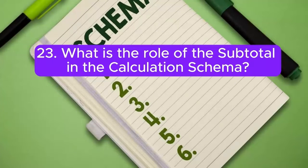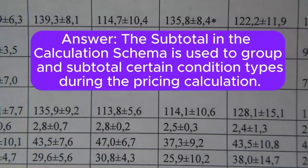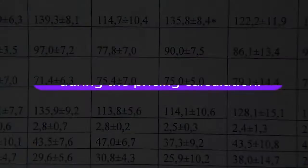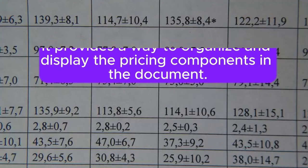Question 23: What is the role of the subtotal in the calculation schema? Answer: The subtotal in the calculation schema is used to group and subtotal certain condition types during the pricing calculation. It provides a way to organize and display the pricing components in the document.